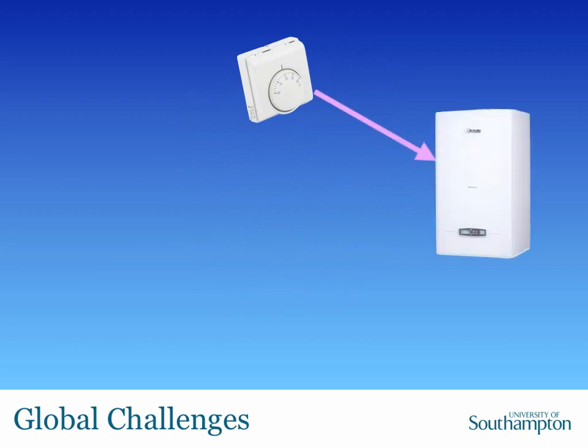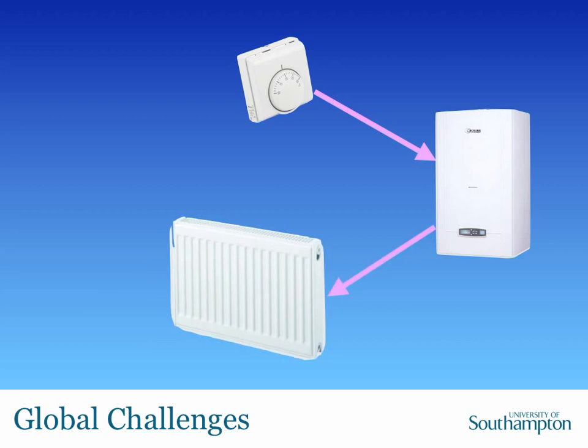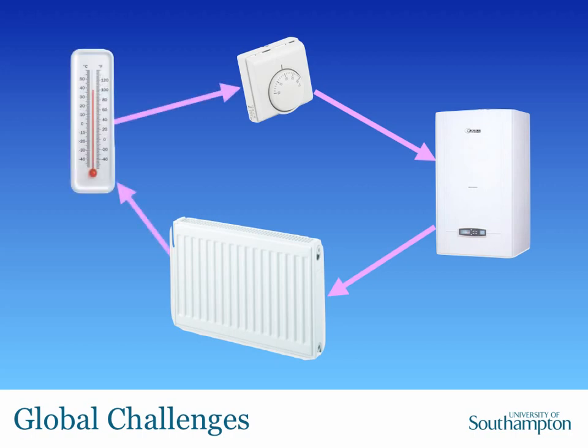So when the temperature goes below the temperature that you've set — let's say you've set it at 20 degrees Celsius — it sends a signal to a gas boiler and tells the boiler to go on. The boiler starts to burn gas, it heats water, it then pumps that water around your house. That hot water radiates its heat out through radiators, increasing the temperature, and that process keeps going until the temperature reaches the fixed point on the thermostat.